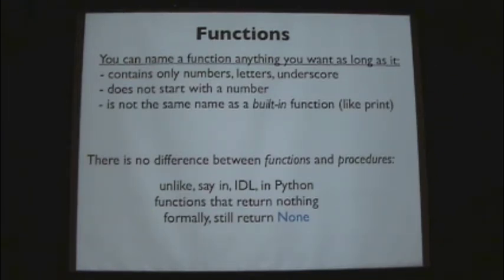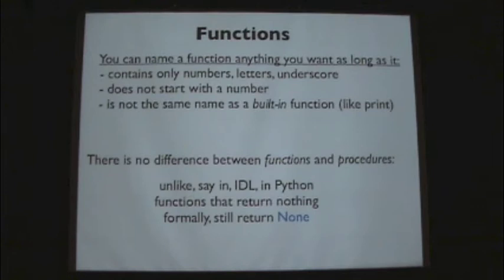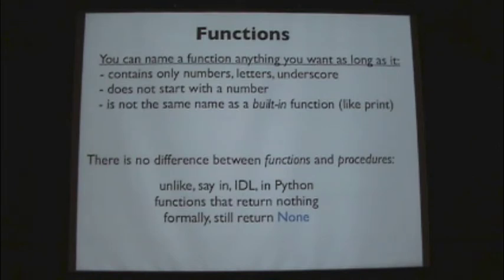There's no difference between functions and procedures in Python unlike in IDL. A function returns something, and if you go through a function without returning anything, what's returned is None. So either you return something — and you can return anything you want — or you just return and whatever called that function gets None back. If you're not assigning that return value, you're fine.